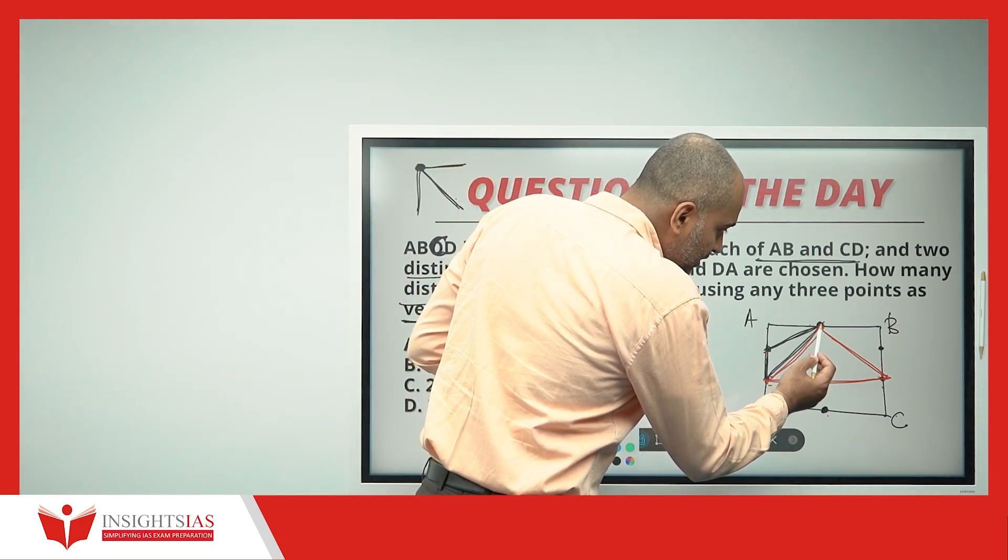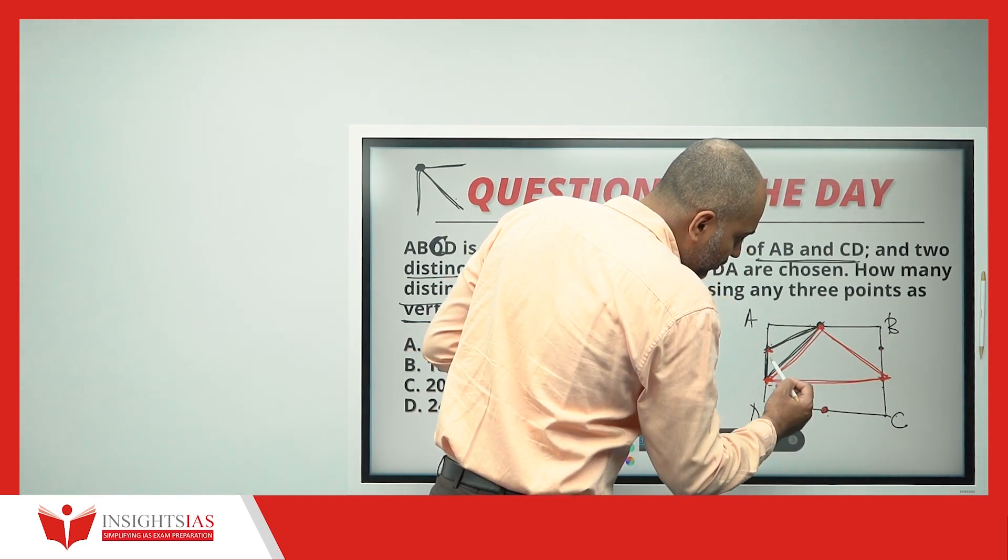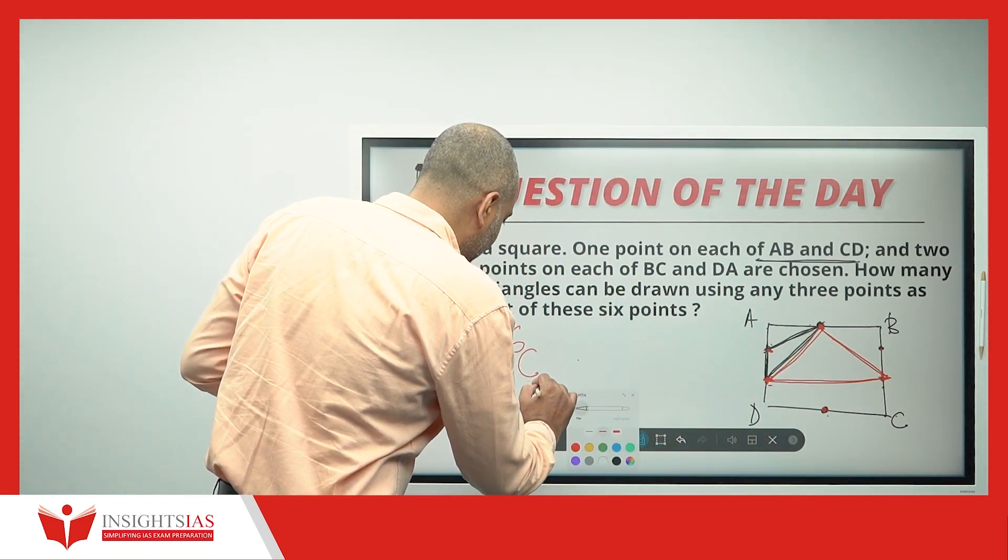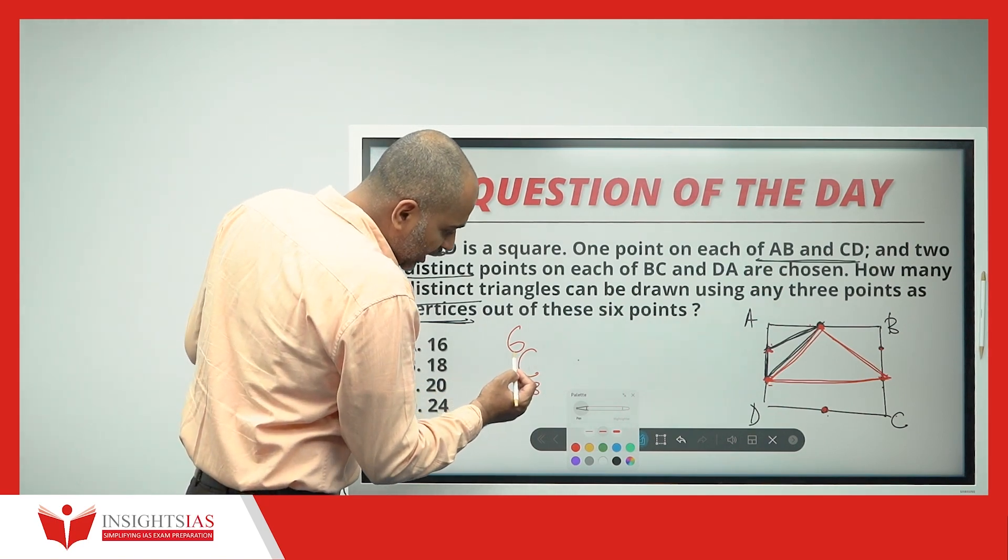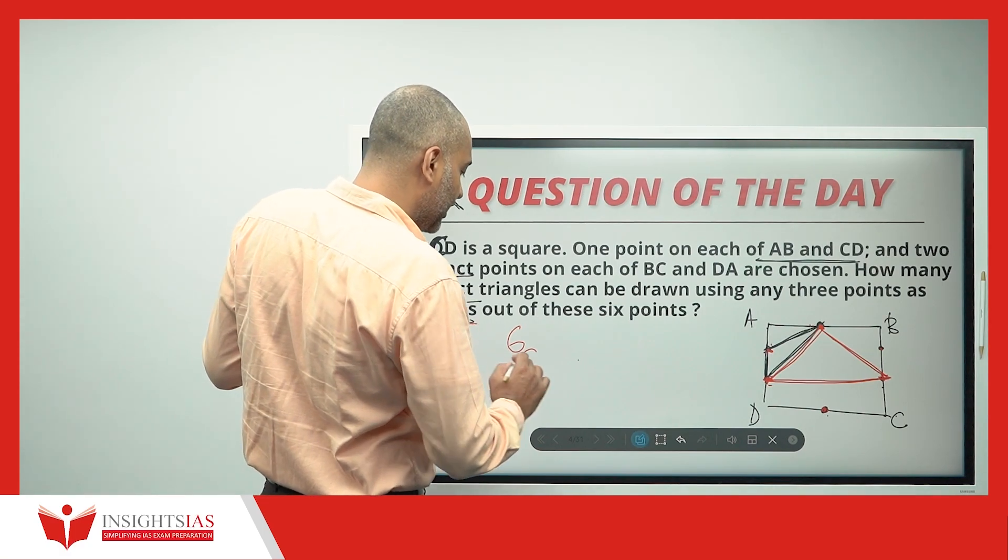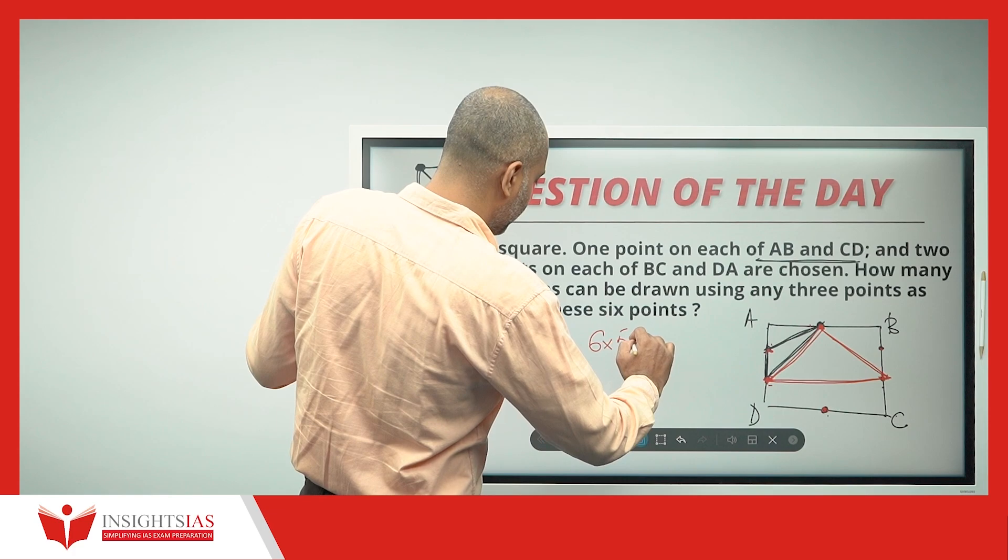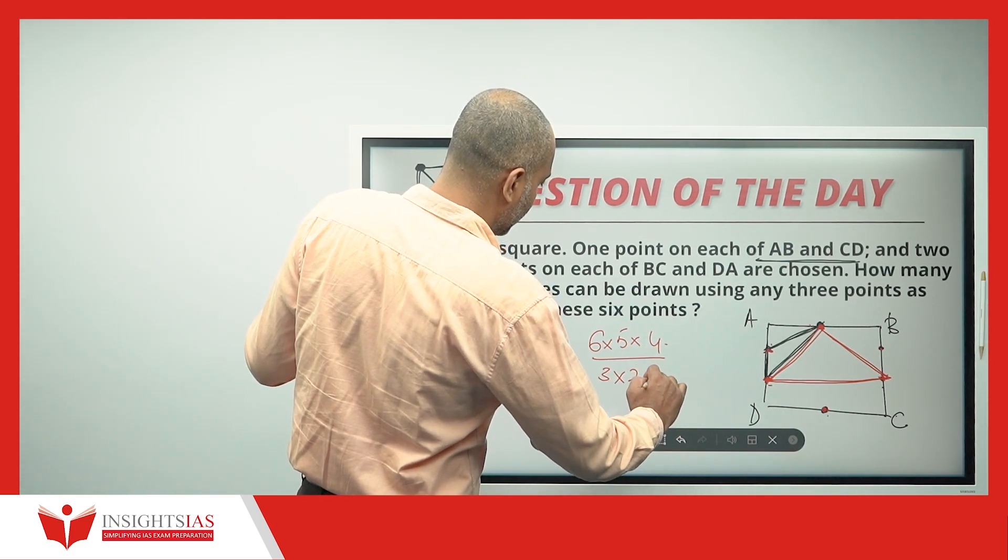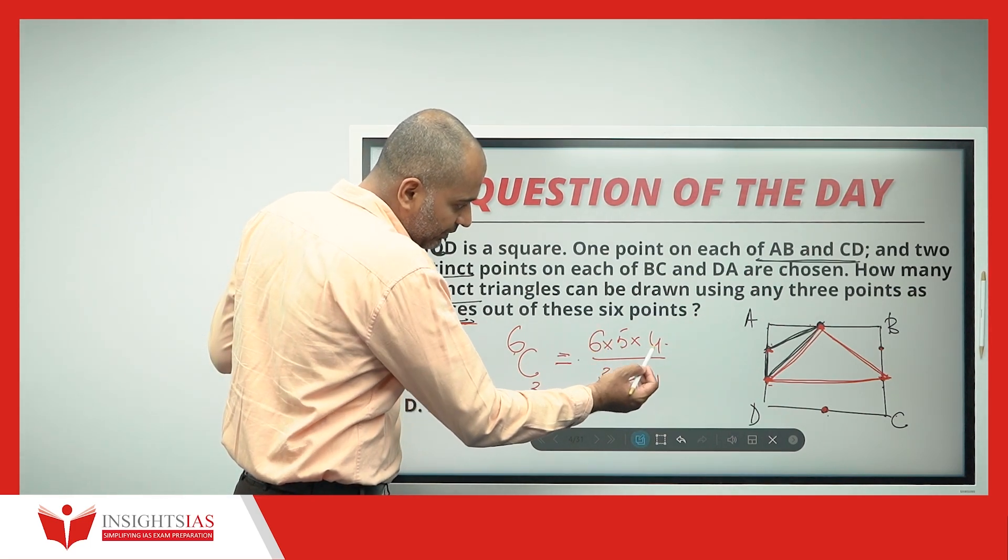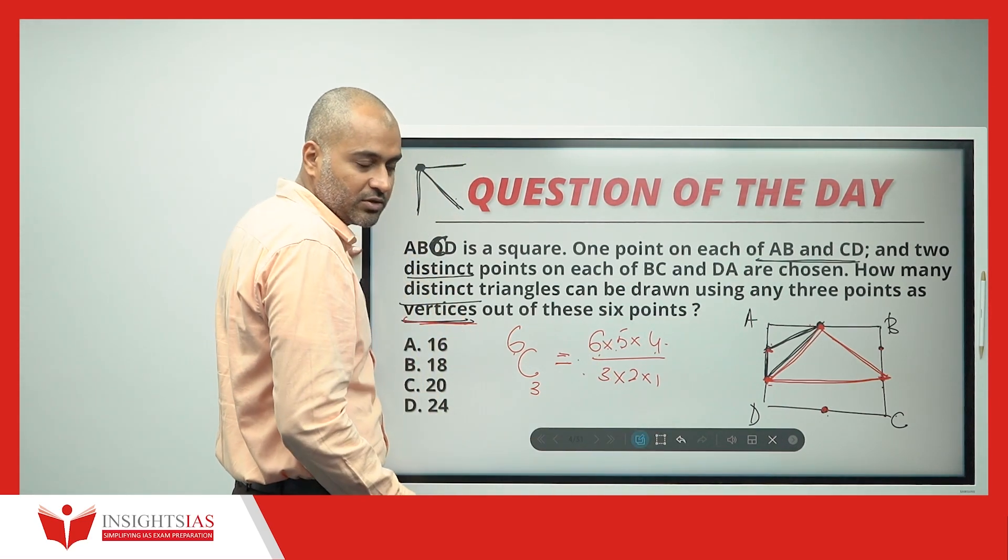So, in our options, I will be having how many choices as my vertex here? 1, 2, 3, 4, 5, 6. Out of 6, I am choosing every time 3. This is a combination question. Out of 6, every time I am choosing 3. So, how many different 3s I can be chosen? 6C3, which can be written as 6 into 5 into 4 divided by 3 into 2 into 1. Start from 6. Three terms here, 6 into 5 into 4, whole divided by 3 factorial, which is nothing but 3 into 2 into 1. This is what combination.